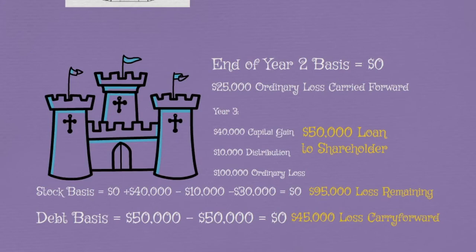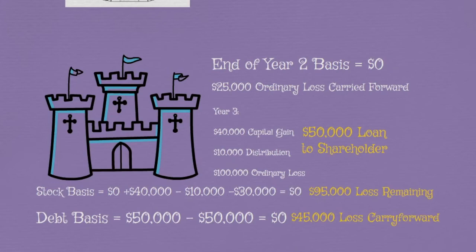There's a catch with using debt basis, though. That $50,000 is still owed to the shareholder, but now the shareholder has no debt basis. So if the castle pays off this debt while the debt basis is zero, there will be a $50,000 gain to the shareholder. However, as to the character of this gain, it is ordinary — and thus a higher tax rate — if this debt isn't evidenced by a written note. But the gain is capital, thus a lower than ordinary tax rate, if there is proper documentation. However, if there is enough increase to basis in the future, it is possible to restore debt basis, which means it might be best for the castle to wait to pay off the loan until the debt is restored to avoid tax.